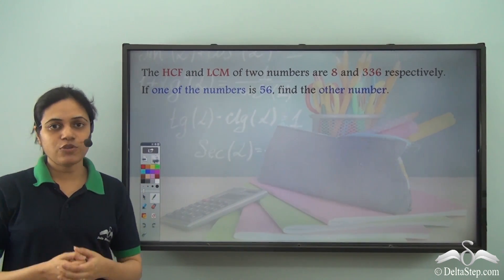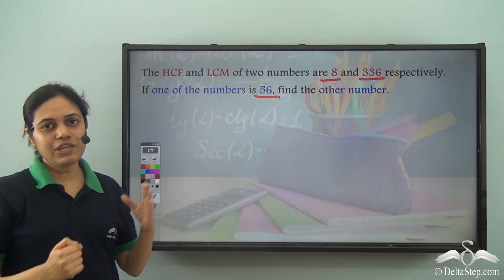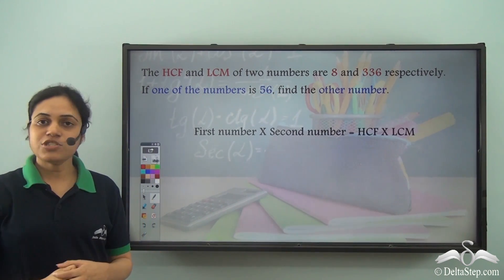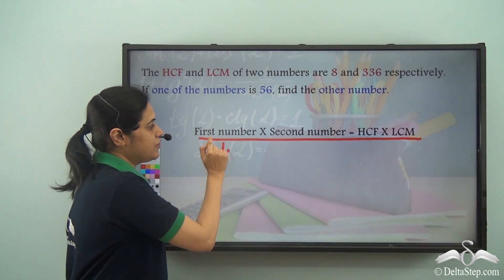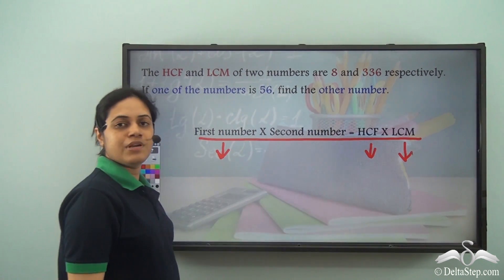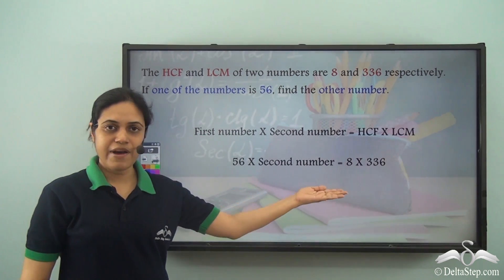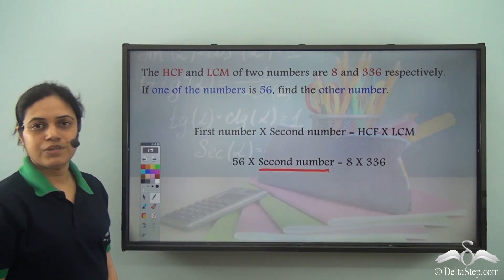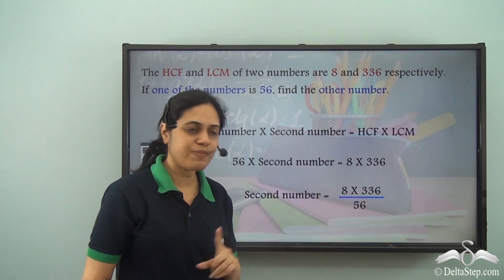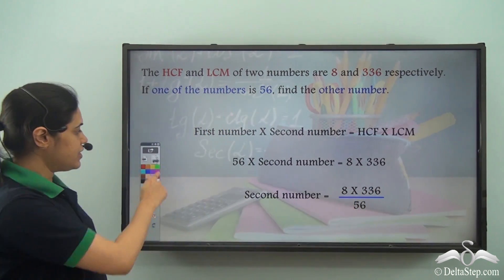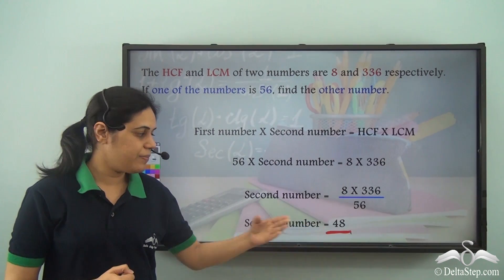Now, if we come back to our original question in which we have HCF, LCM, and one number, and we need to find the other number, we can solve it using this property. I know the first number, I know the HCF, and I know the LCM, so I need to find the second number. Putting the values, I can find the second number as 8 × 336 ÷ 56. If I solve this, I get the answer as 48. So, the second number is 48.